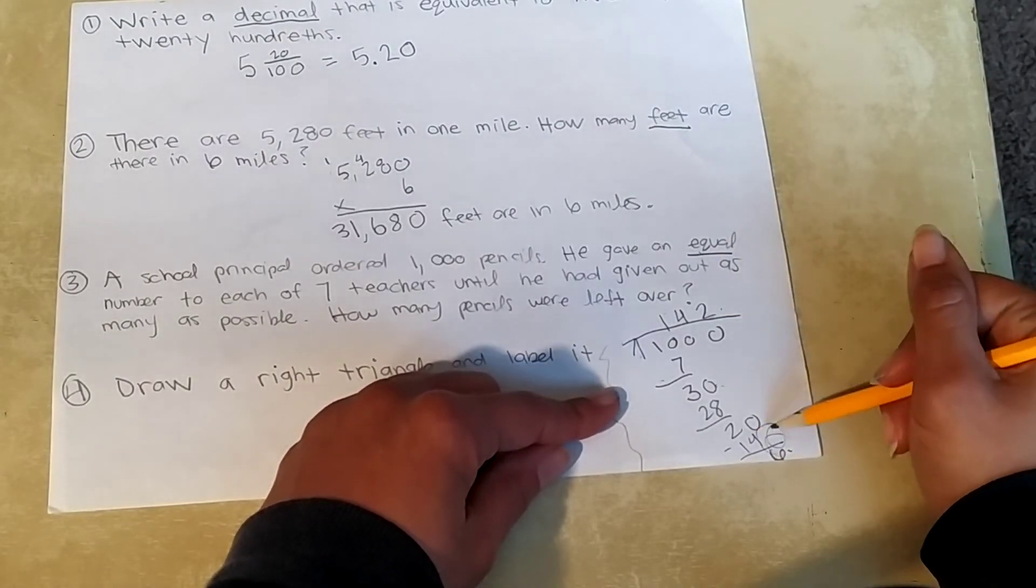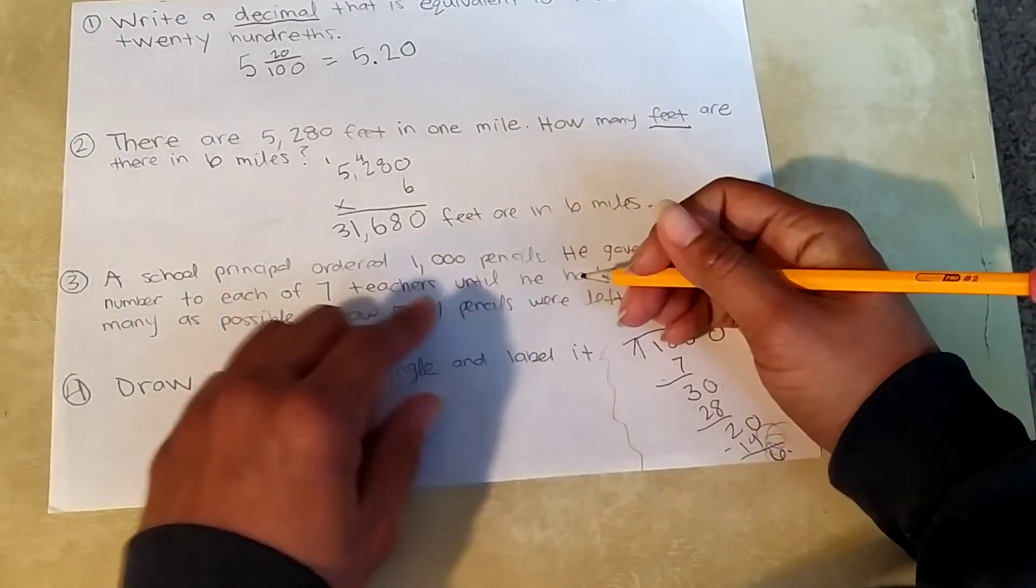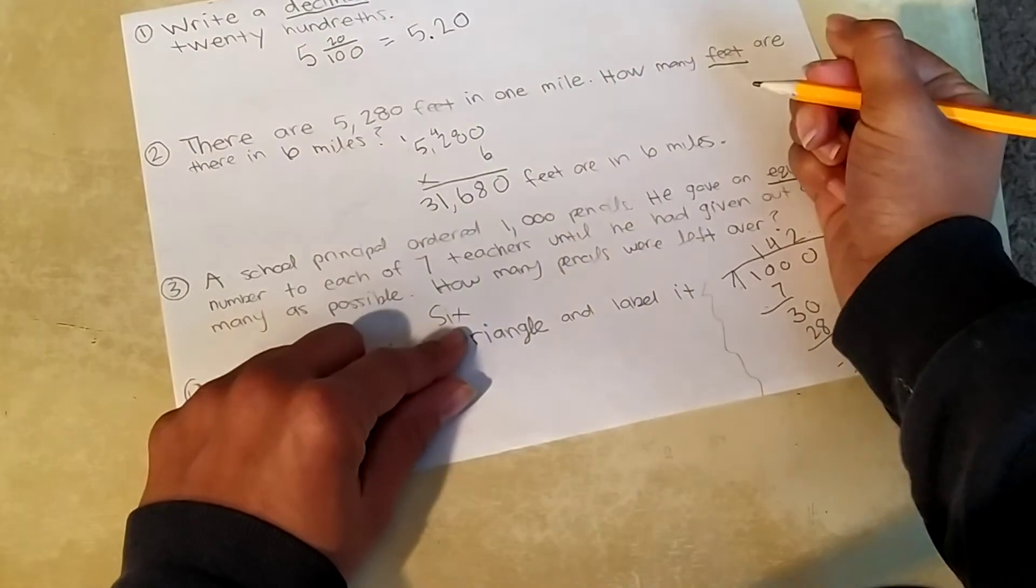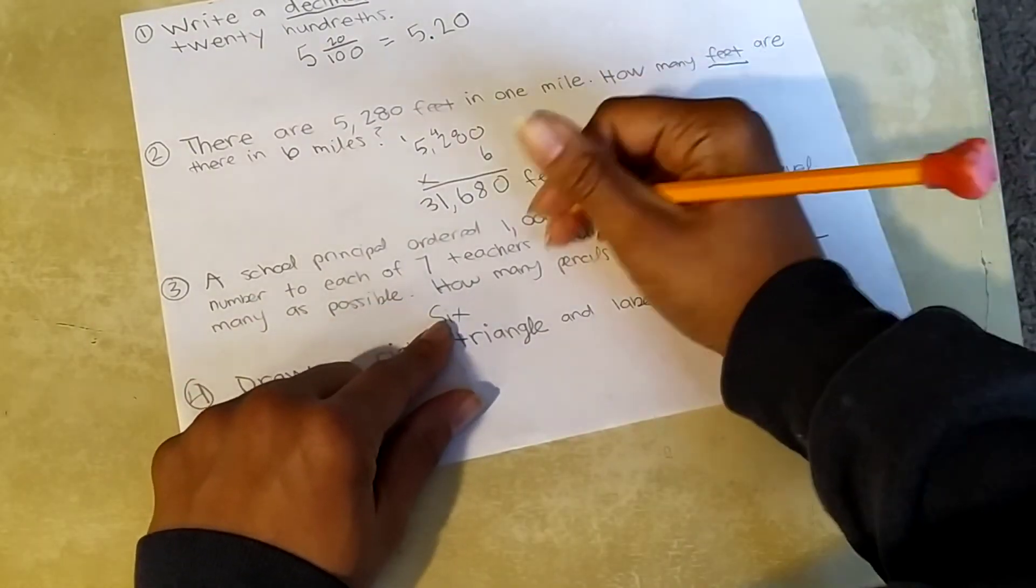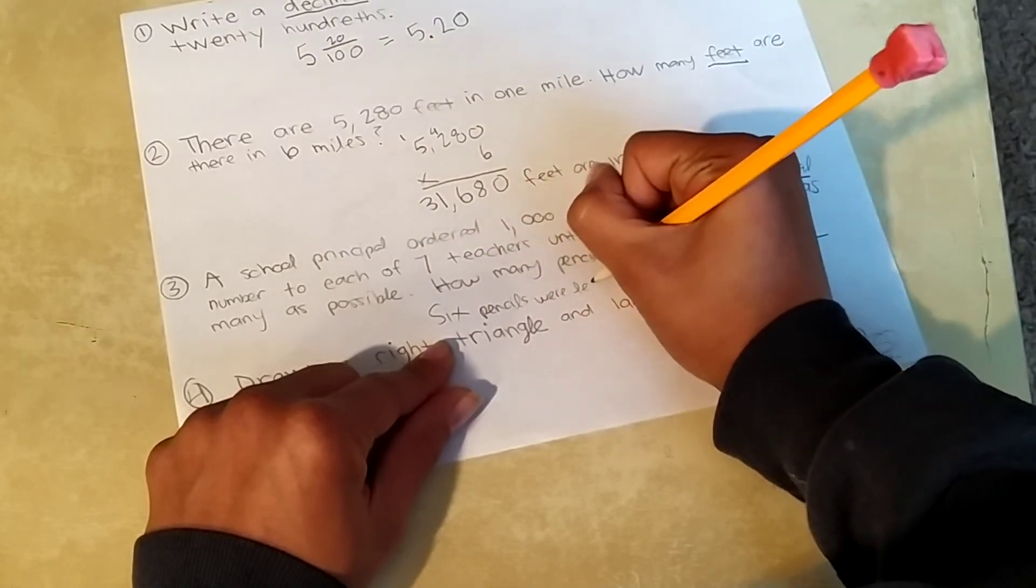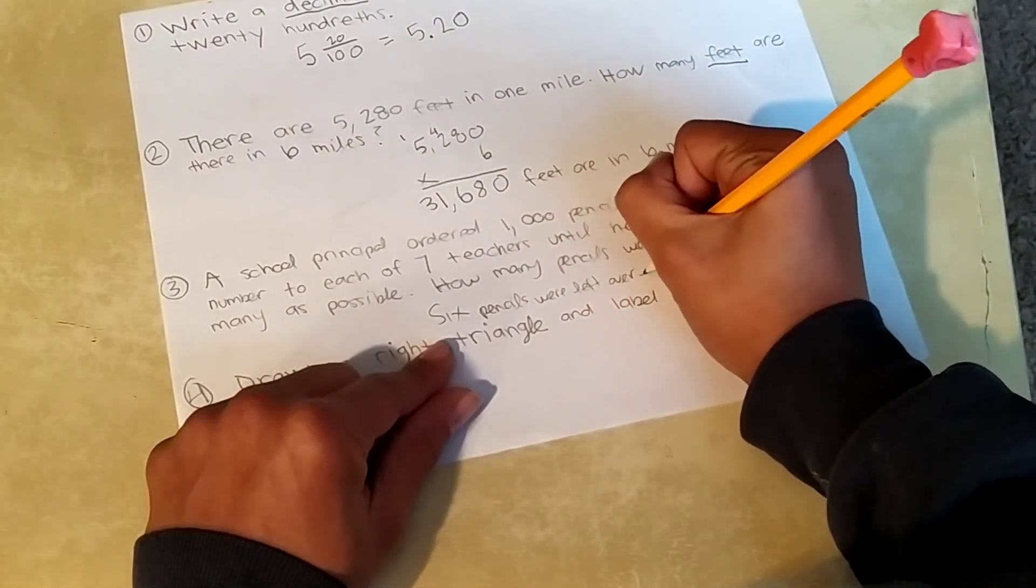We have to look at the remainder to see how many pencils were left over. Down here. I'm going to circle that six. So let's answer our question. Six. Right there. Six pencils were left over. Period.